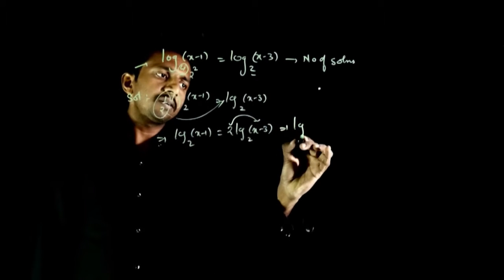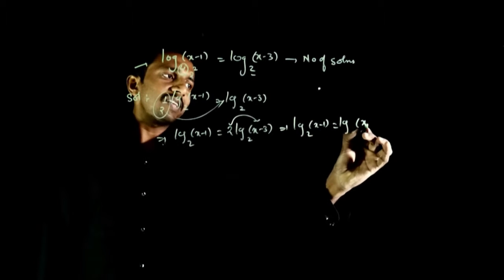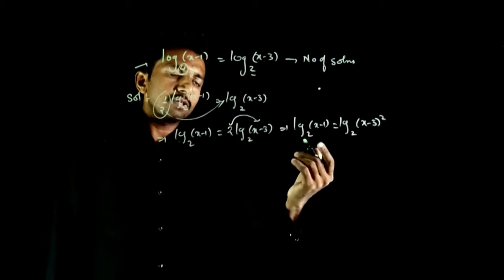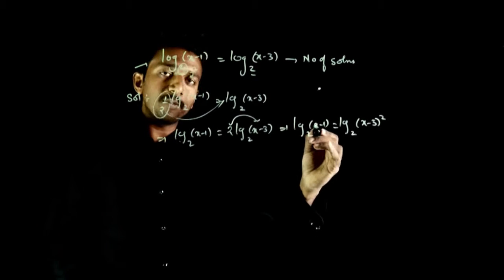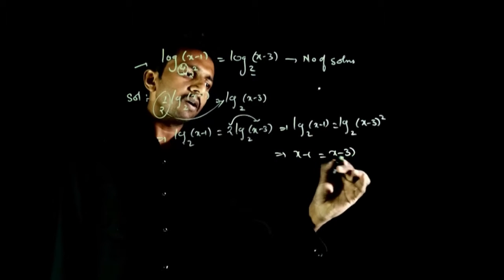This implies log base 2 of (x-1) equals log base 2 of (x-3)². The bases are equal, so the arguments have to be equal. This implies x-1 = (x-3)².